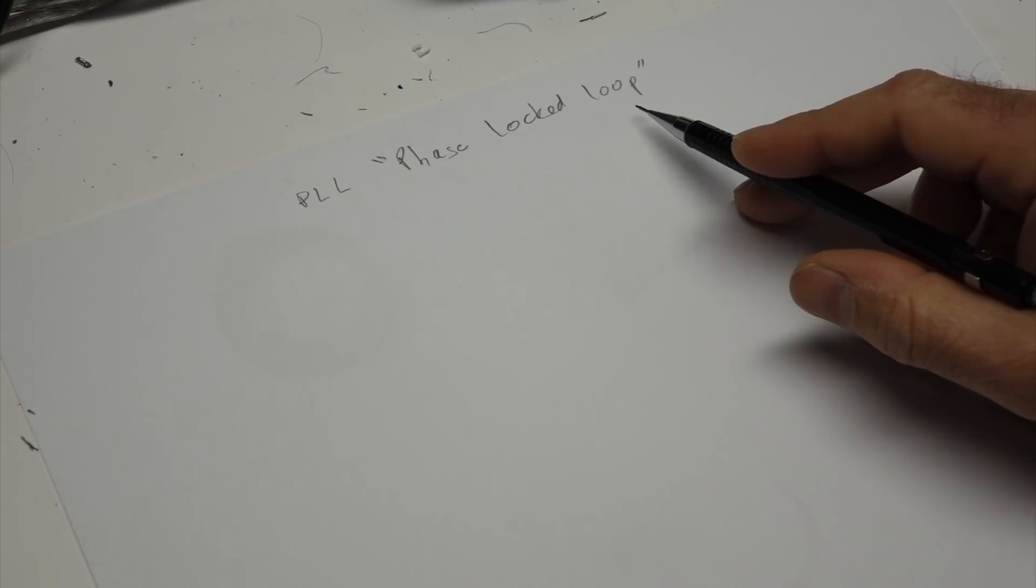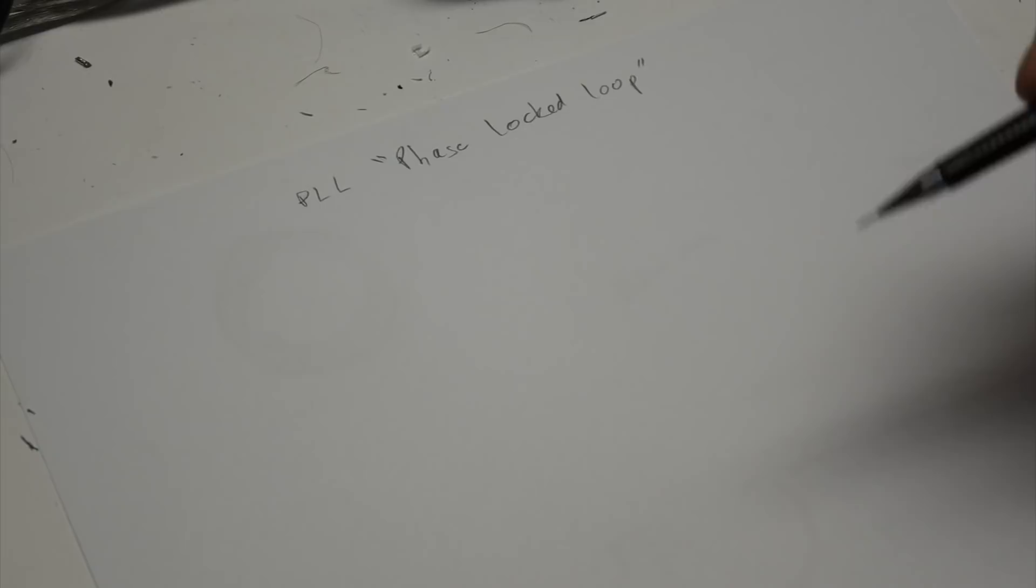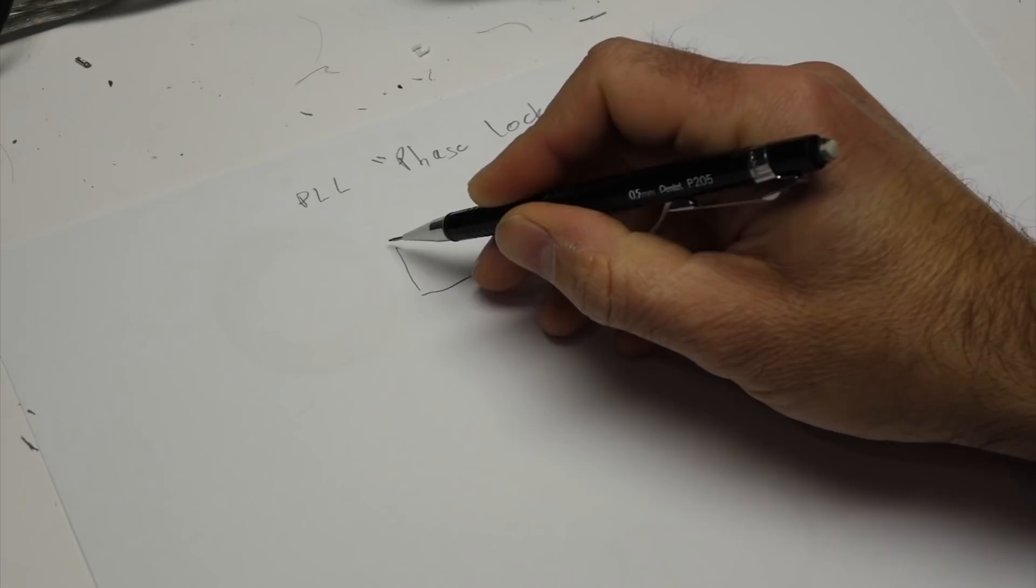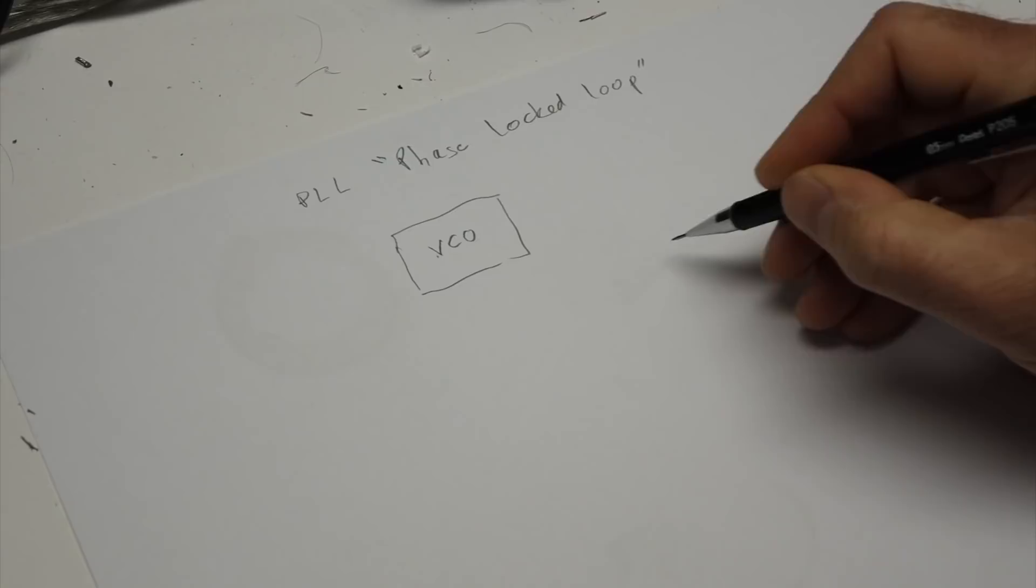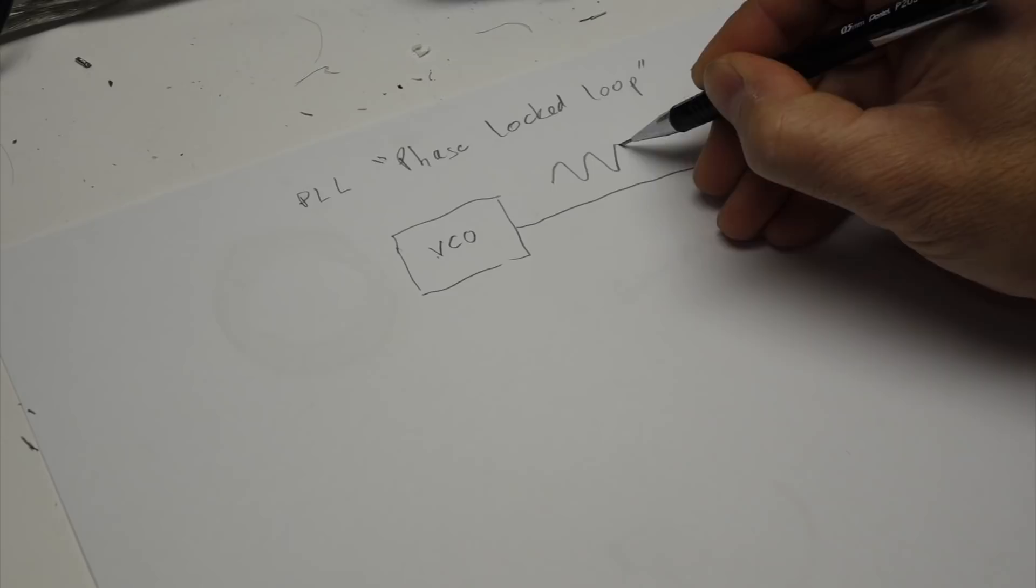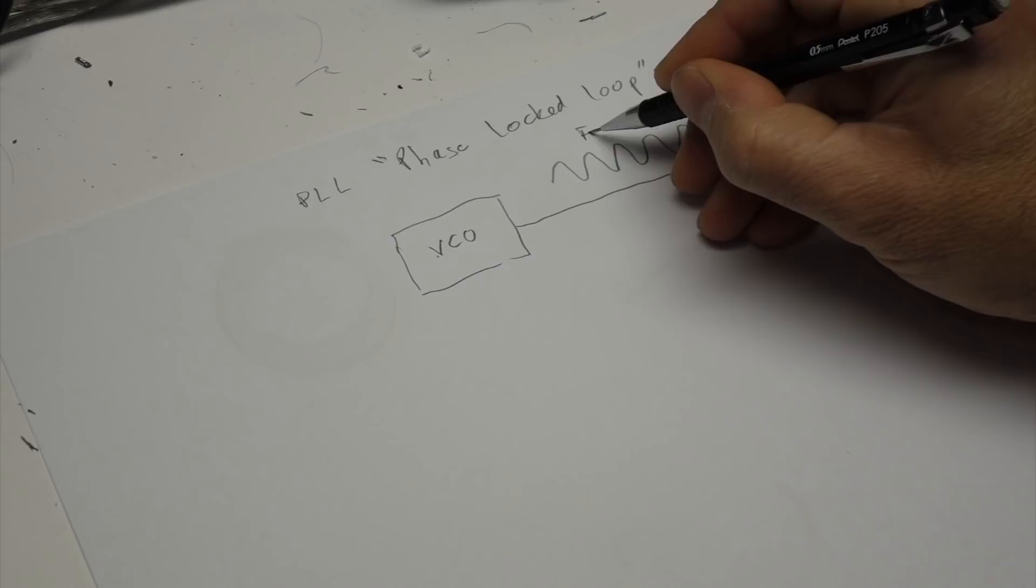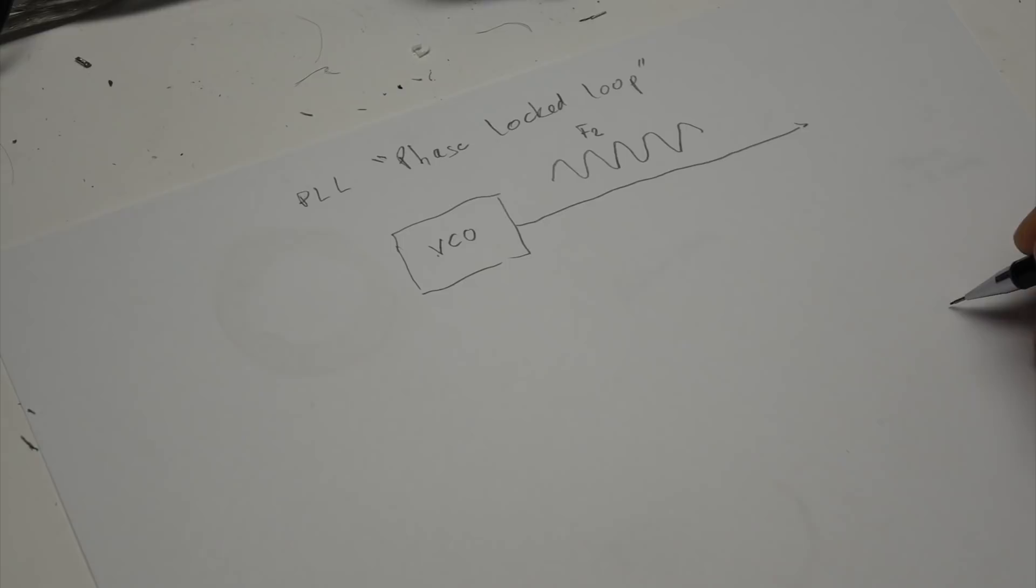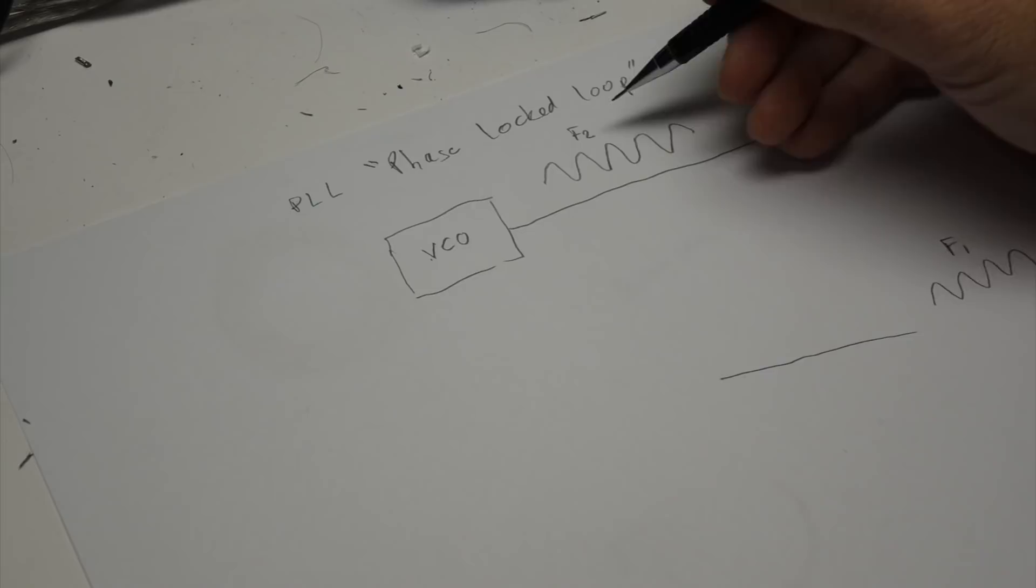So PLL, phase-locked loop. In the simple case, you would use this to copy one frequency to control one frequency with another. So let's imagine you have a VCO, voltage-controlled oscillator, which emits a frequency which is controlled by the voltage in. We'll call it F2. And on the input side you have a frequency F1. And you want to basically copy the frequency F1 into F2 exactly.